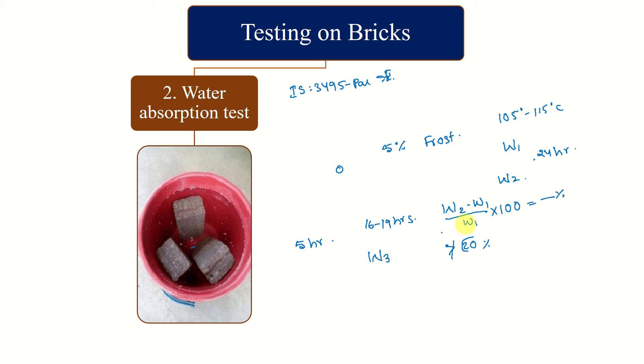You can follow either test or the boiling test. W3 minus W1 by W1 into 100 gives the absorption percentage of the brick. That is all about water absorption test. I have also mentioned a YouTube link here that will show you how the experiment will be done. You can access the link from the notes.